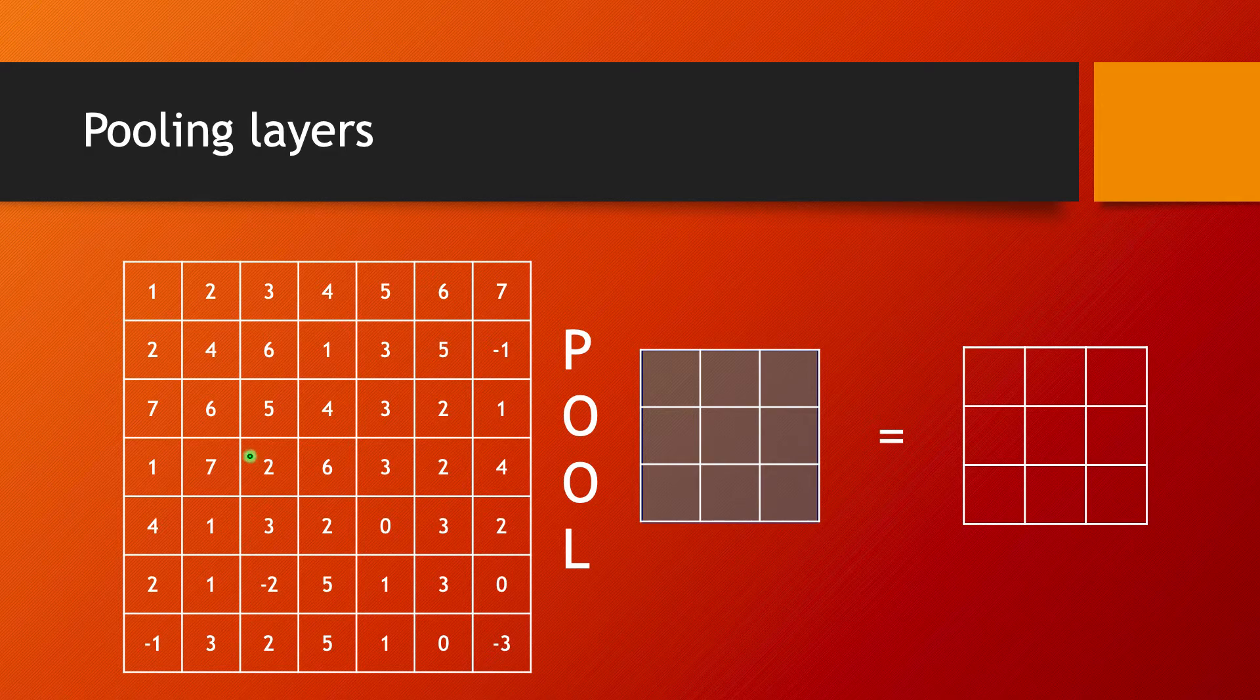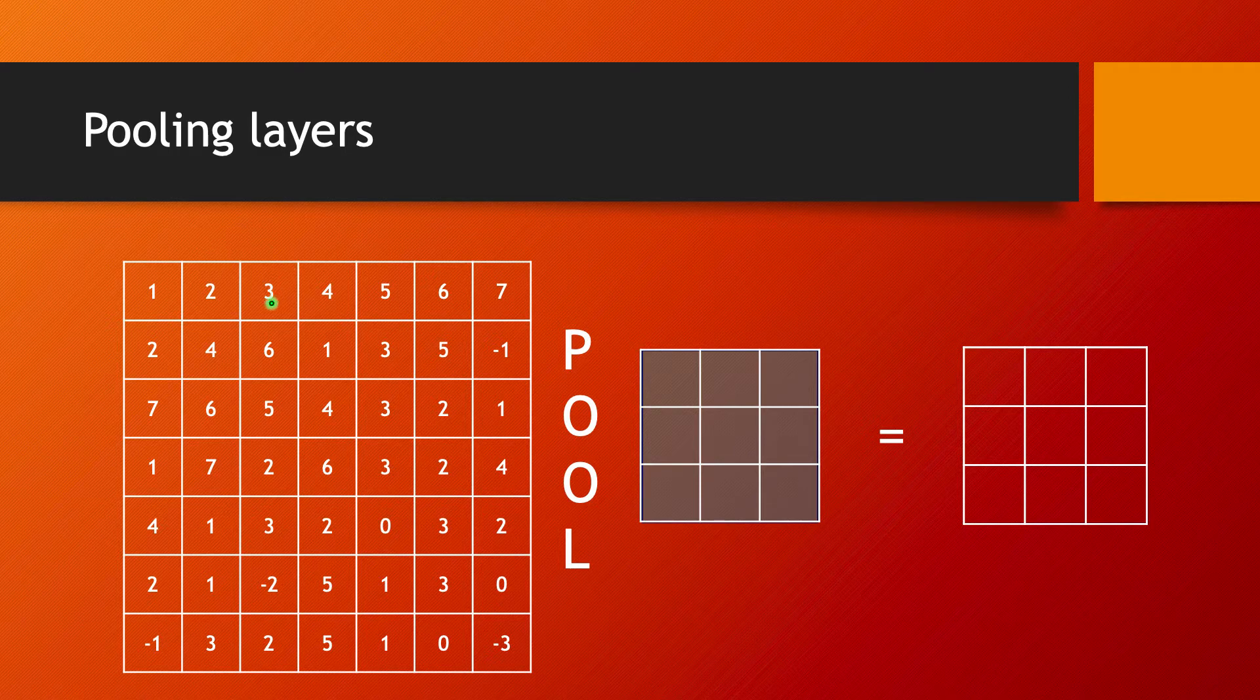We have the idea of strides. So you have the option, and very often used in fact, to skip some positions. The net effect of this pooling layer is that the size of your input is going to shrink.